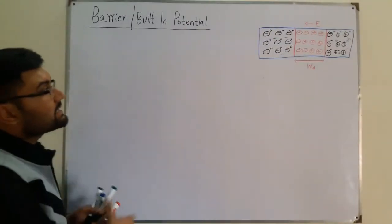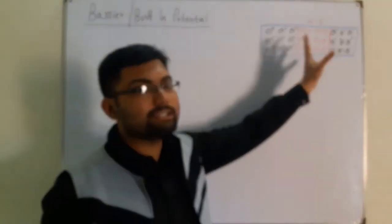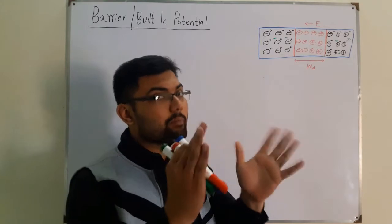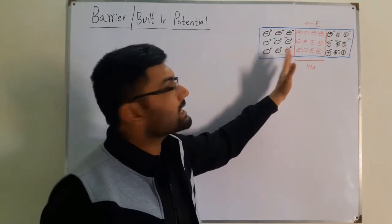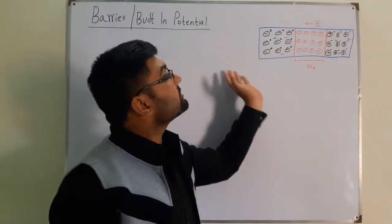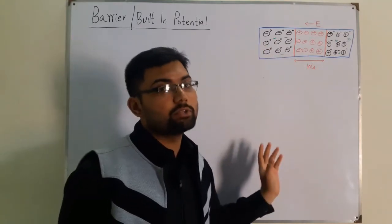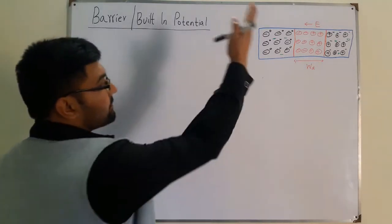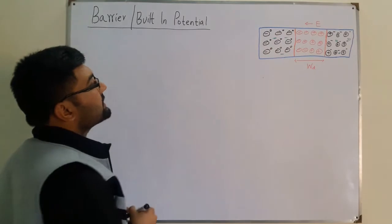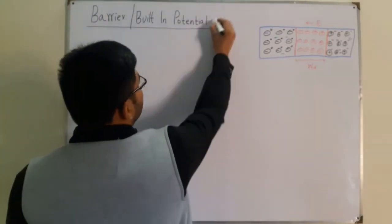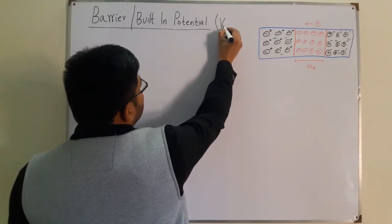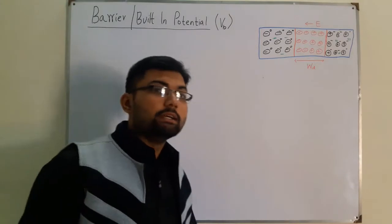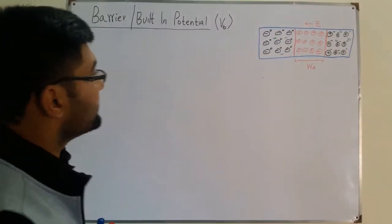This electric field has a potential. Think of it as acting like a capacitor — we have a potential between the plates acting as a barrier to further flow and further recombination of majority charge carriers, which would otherwise increase the width of the depletion region. This electric field potential is known as the barrier potential or the built-in potential, represented as VB.